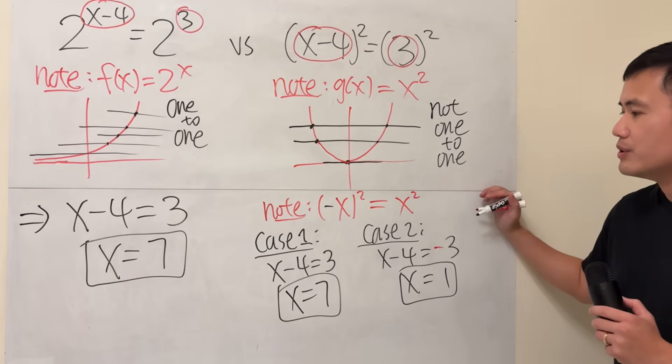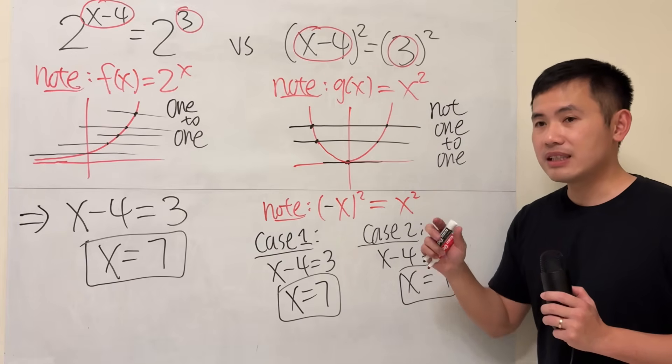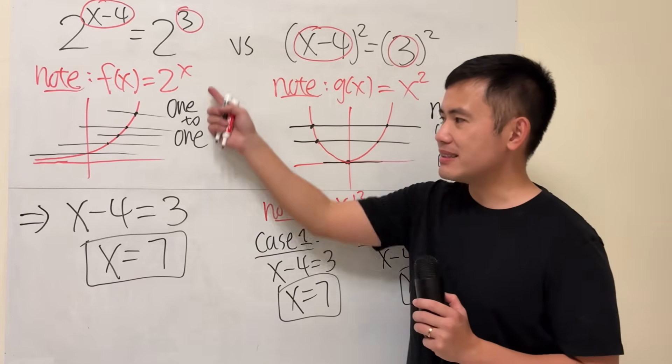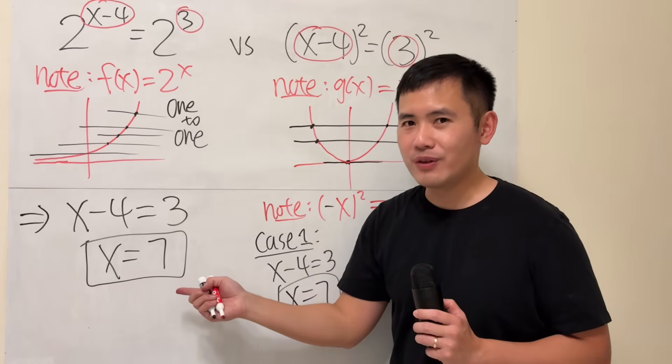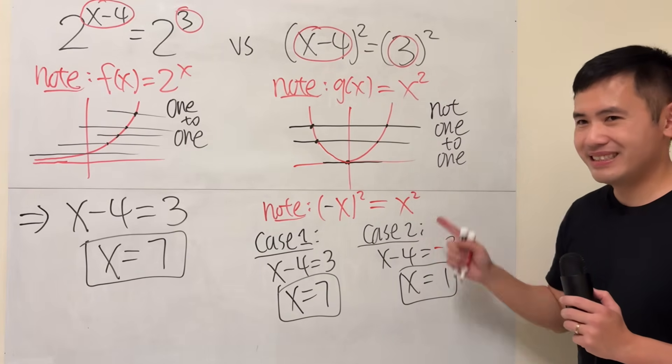So, be super, super careful depending on what kind of functions that you have. Sometimes, you can cancel them very nicely only when it's a one-to-one function. If it's not, make sure you do it more carefully. That's it.